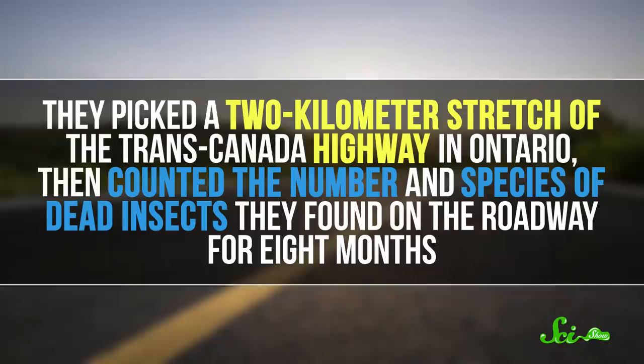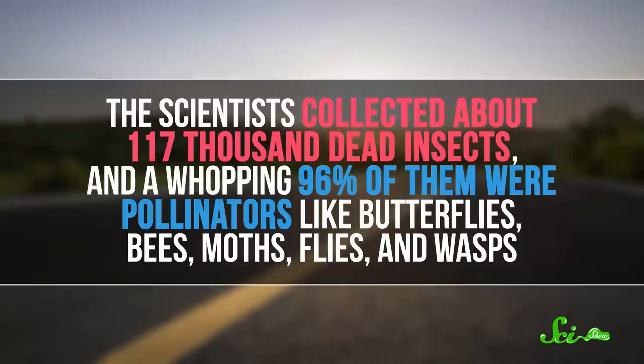In 2012 and 2013, a group of scientists decided to figure out just how many bugs end up as roadkill. They picked a two-kilometer stretch of the Trans-Canada Highway in Ontario, then counted the number and species of dead insects they found on the roadway for eight months.